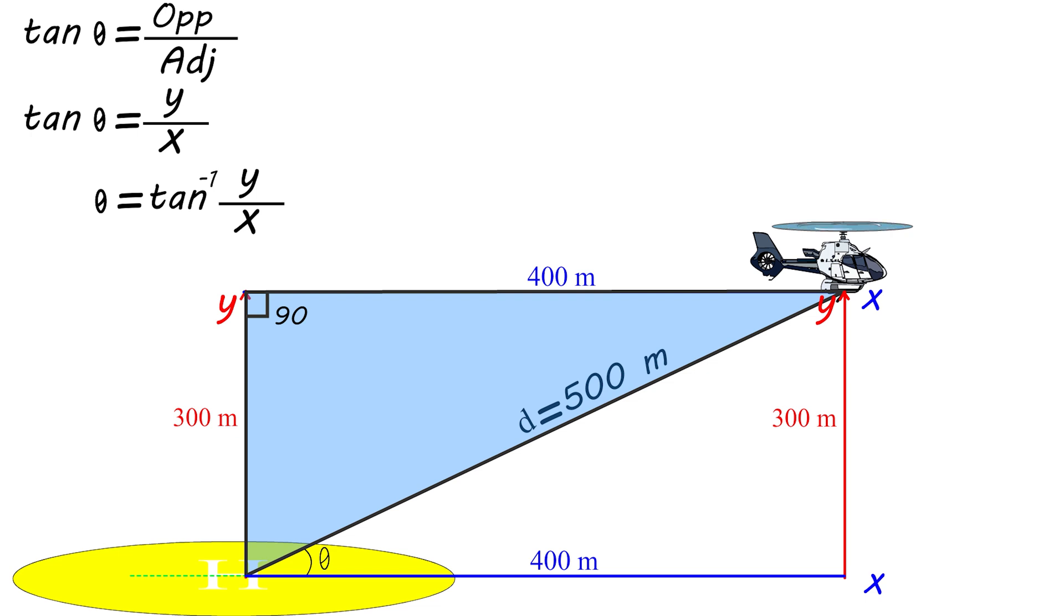So to find the angle theta of the helicopter displacement with the x-axis, we find first the opposite for the angle theta, which equals 300 meters, and the adjacent for the angle theta is 400 meters. So theta equals tan inverse of 300 divided by 400. Therefore, theta equals 36.9 degrees. So the helicopter's final displacement equals 500 meters, with an angle of 36.9 degrees to the x-axis.